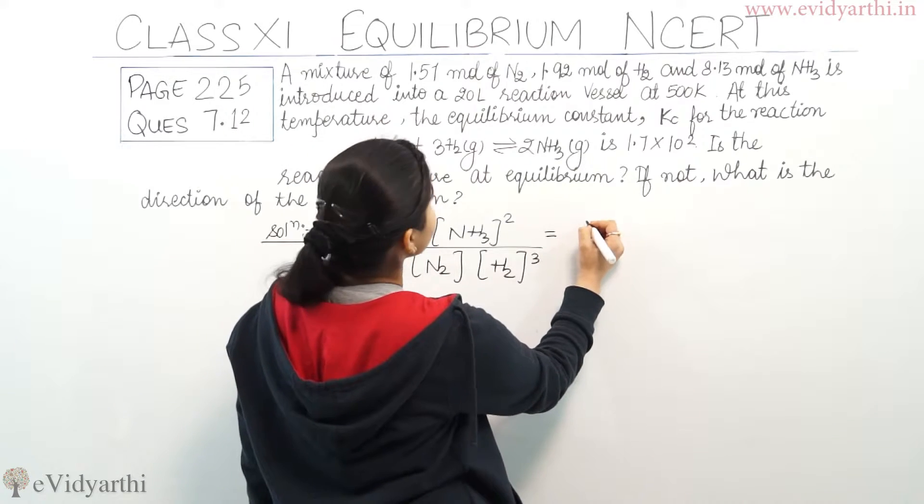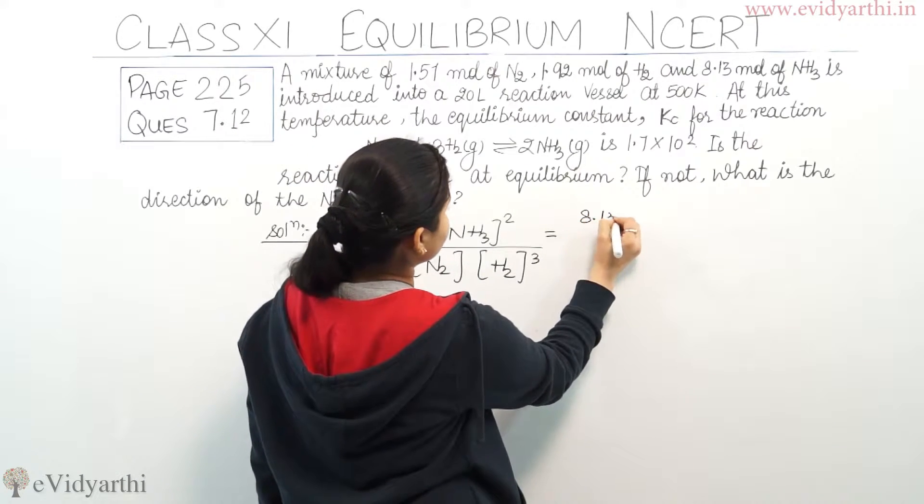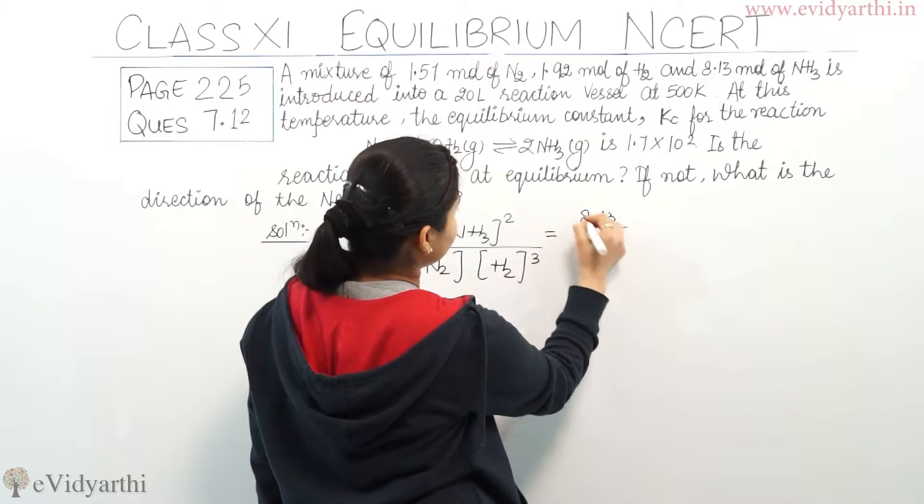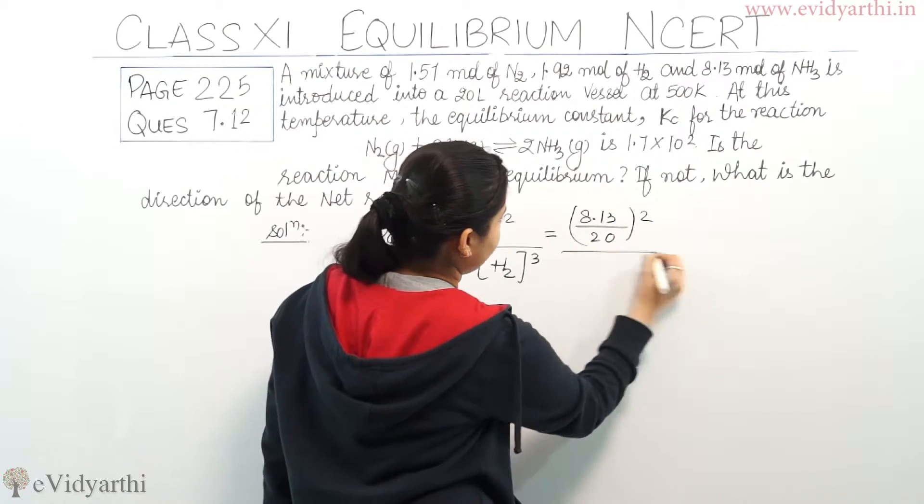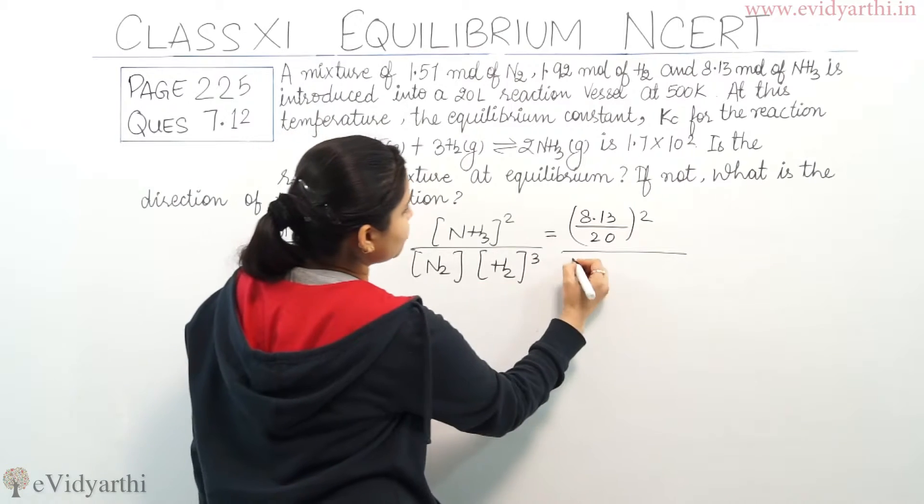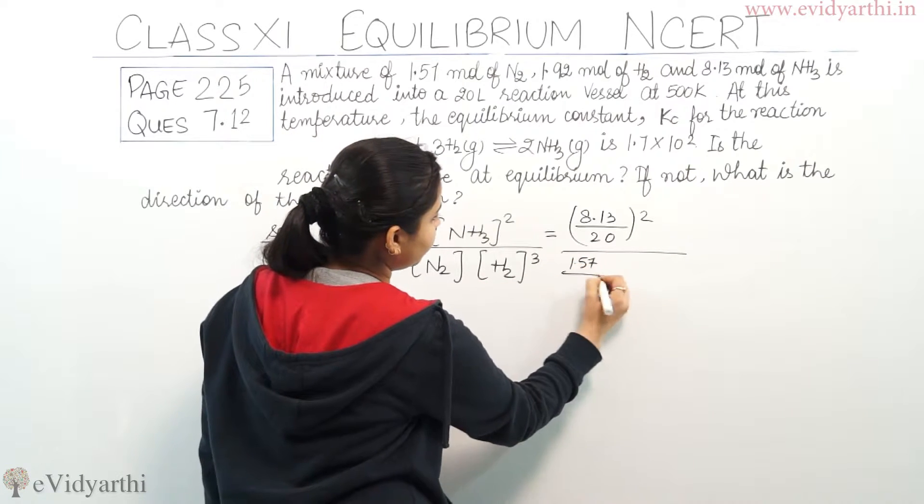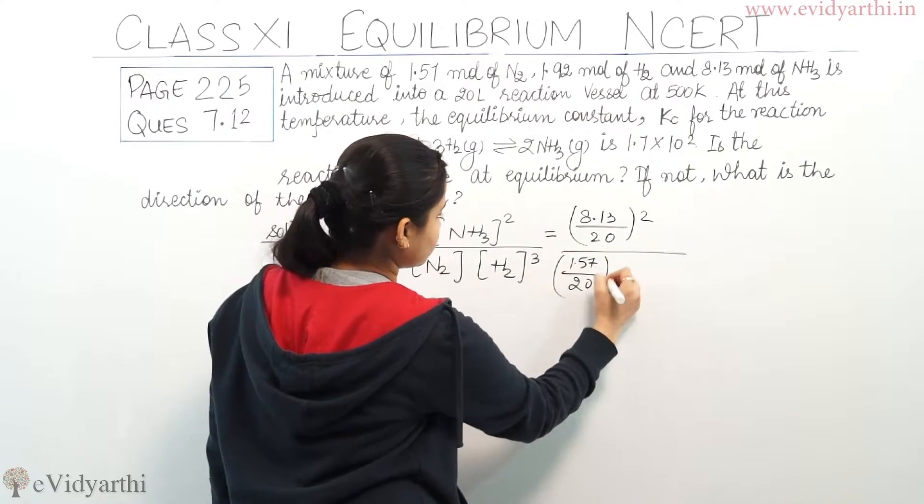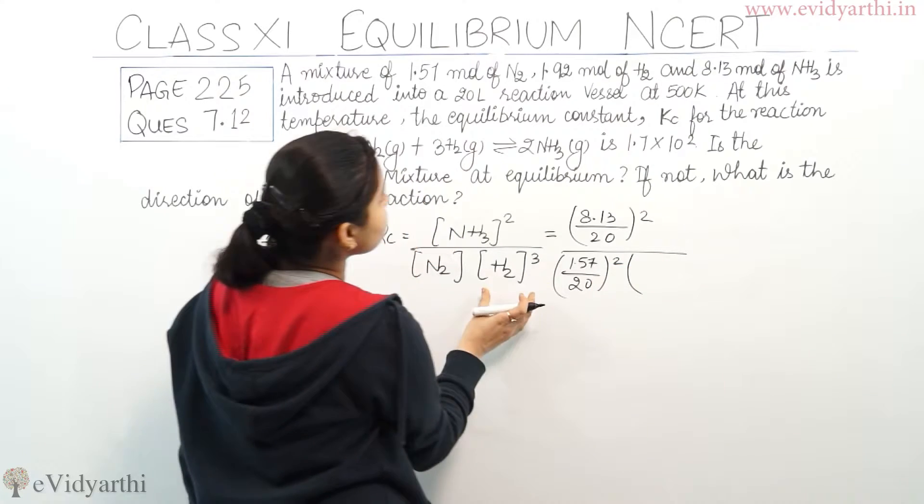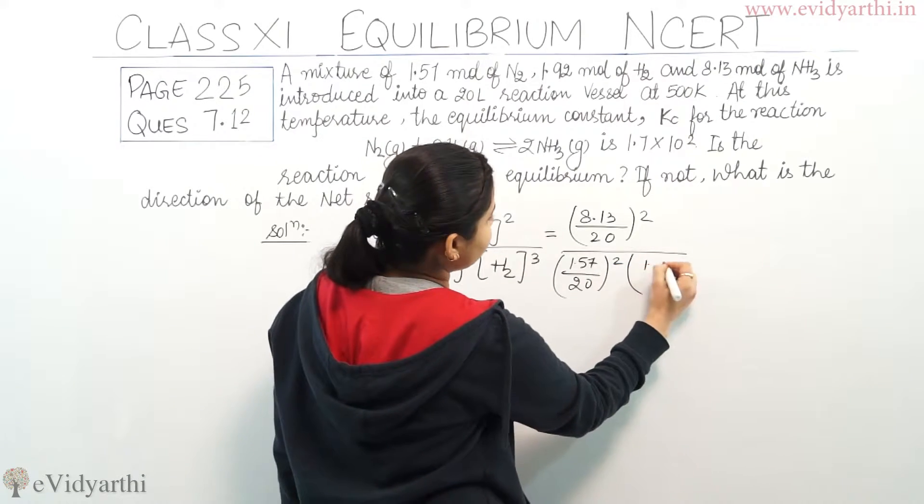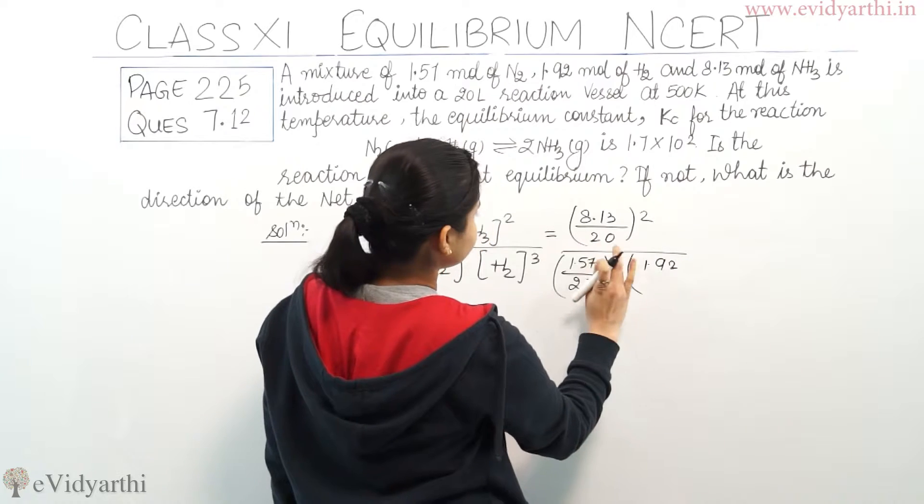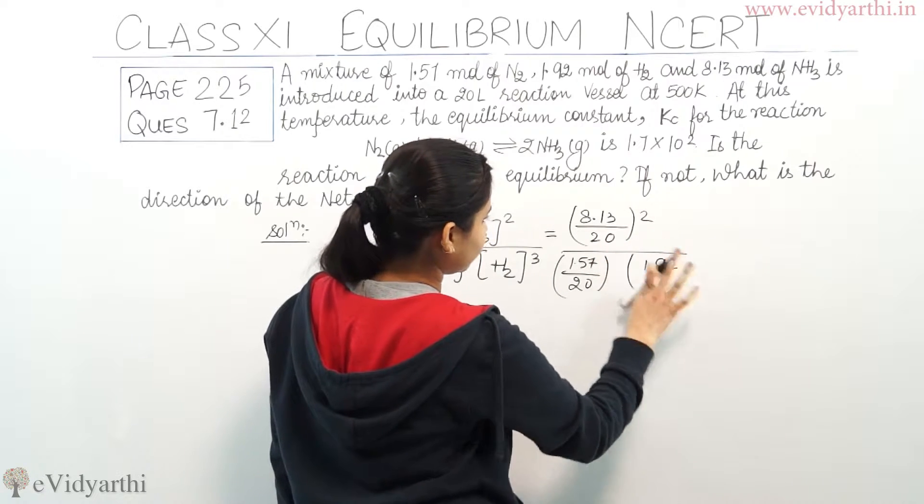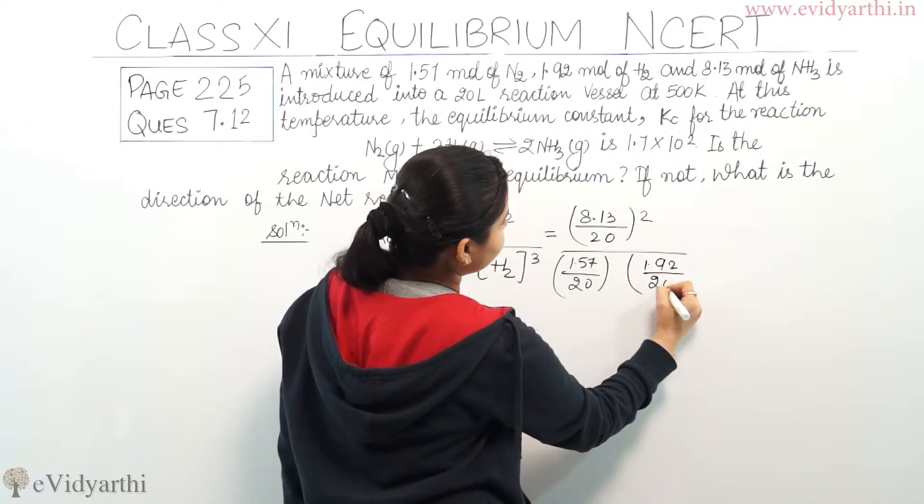Divided by N2, N2 ka concentration tha 1.57 divided by 20. And H2 ka concentration tha 1.92 divided by 20 raised to power 3.